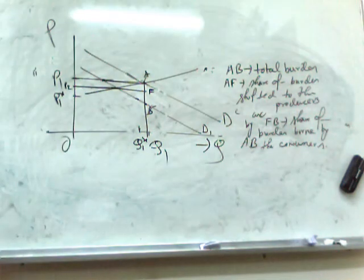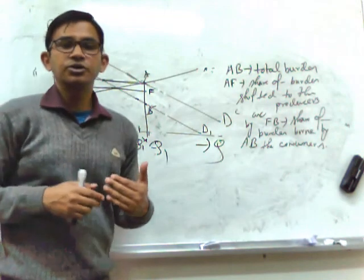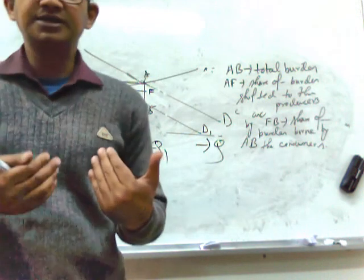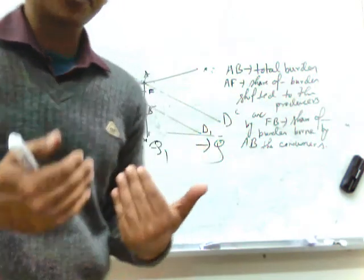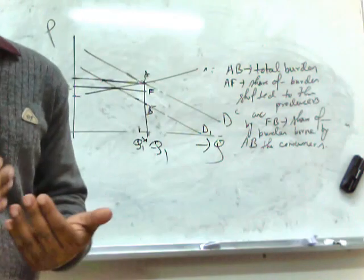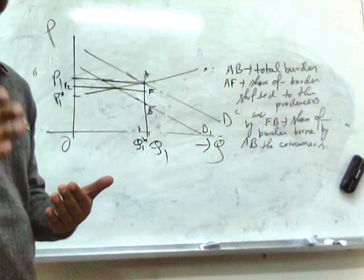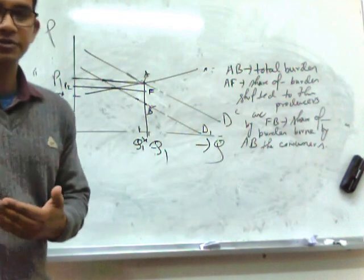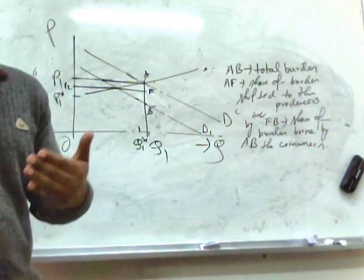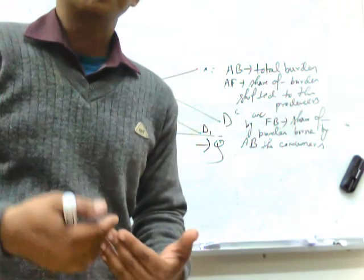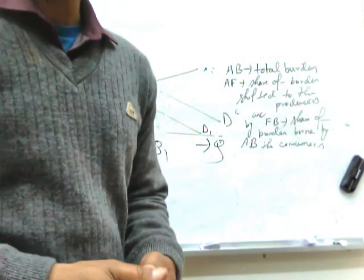In this part we have seen that higher the price elasticity of supply, lower will be the share of burden that consumers can transfer towards the producers in the case of indirect taxation. We can conclude that higher the price elasticity of demand, lower will be the share of burden to the consumers and higher burden towards the producers, and vice versa for price elasticity of supply.